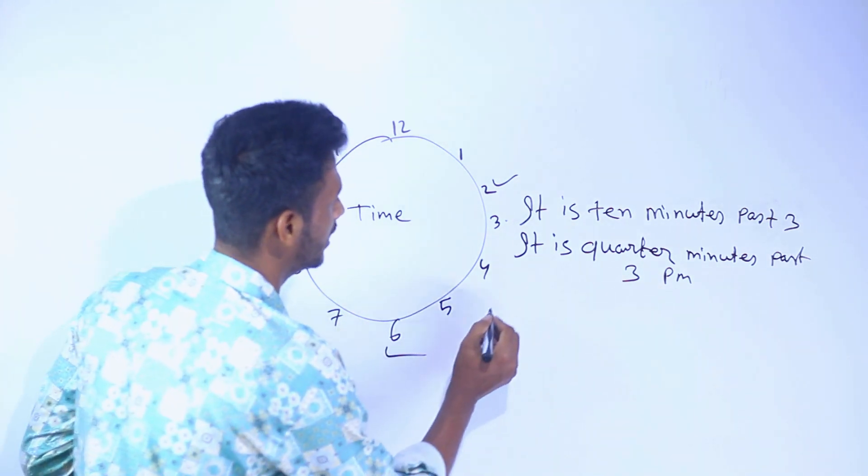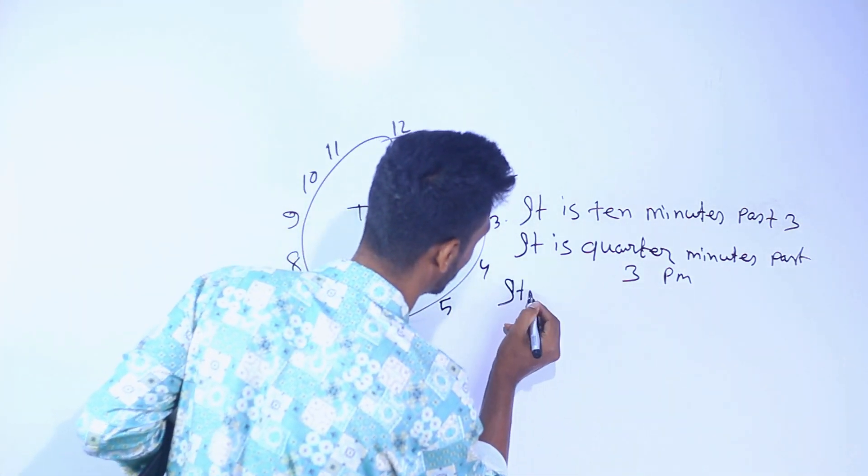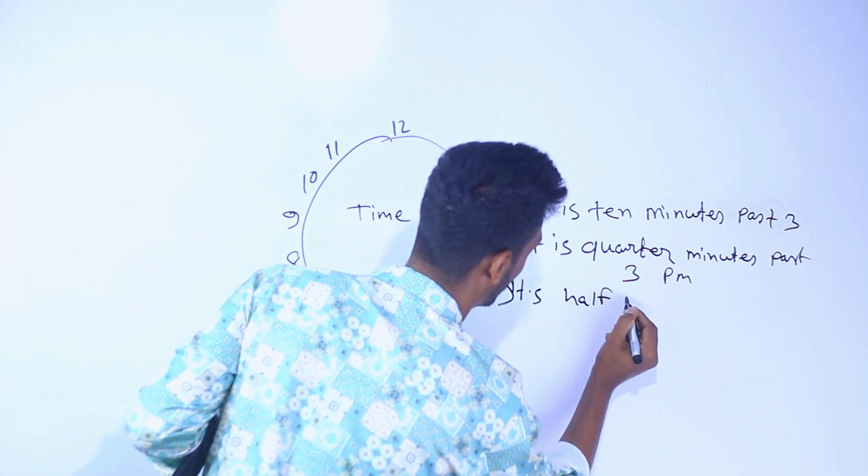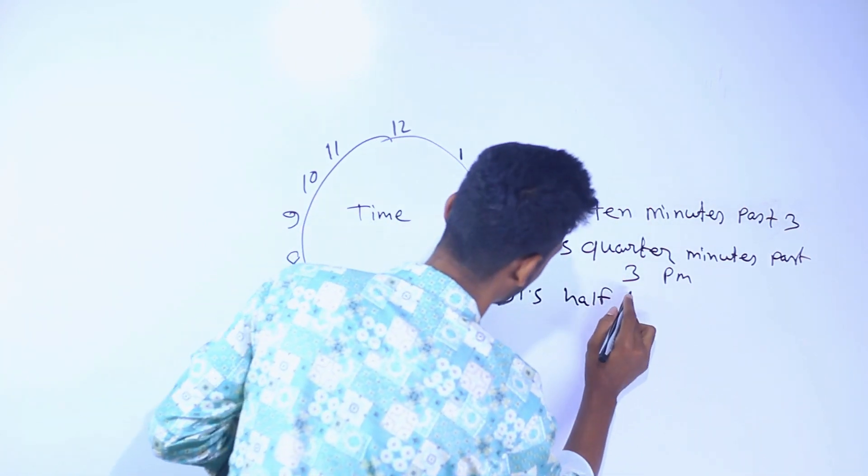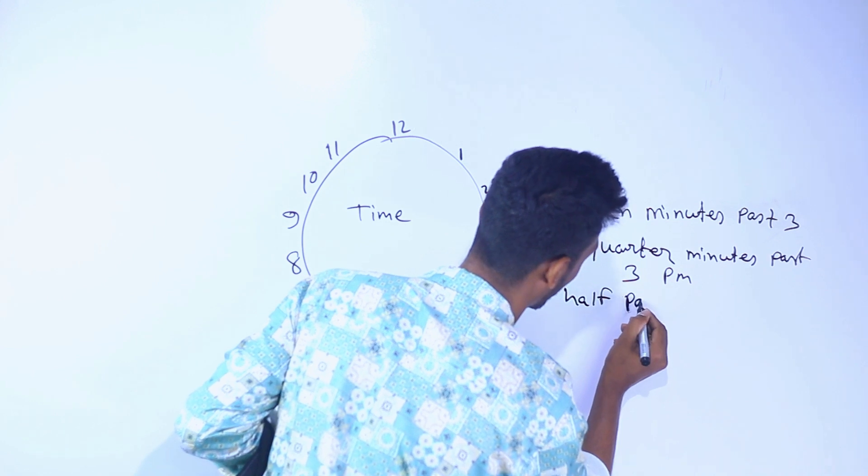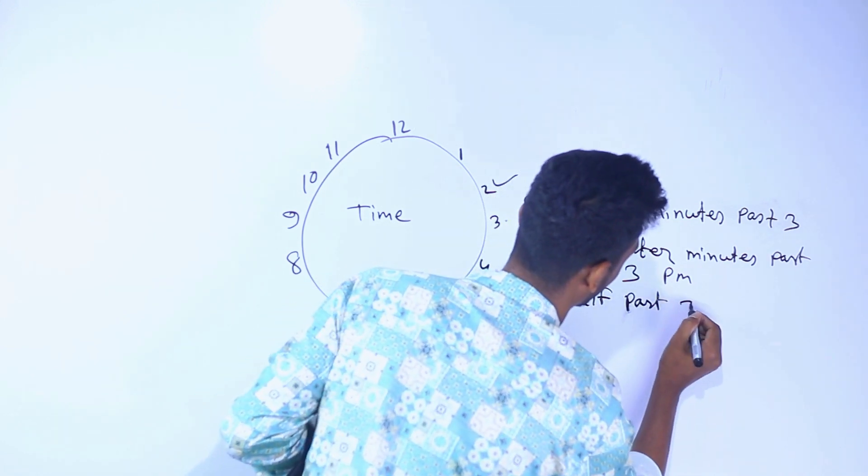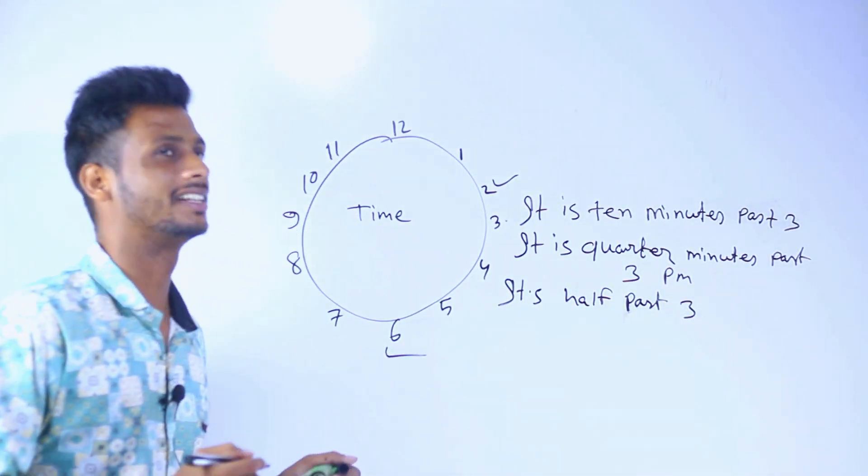It is half past three. Half past three means it is half past 3, 3:30.